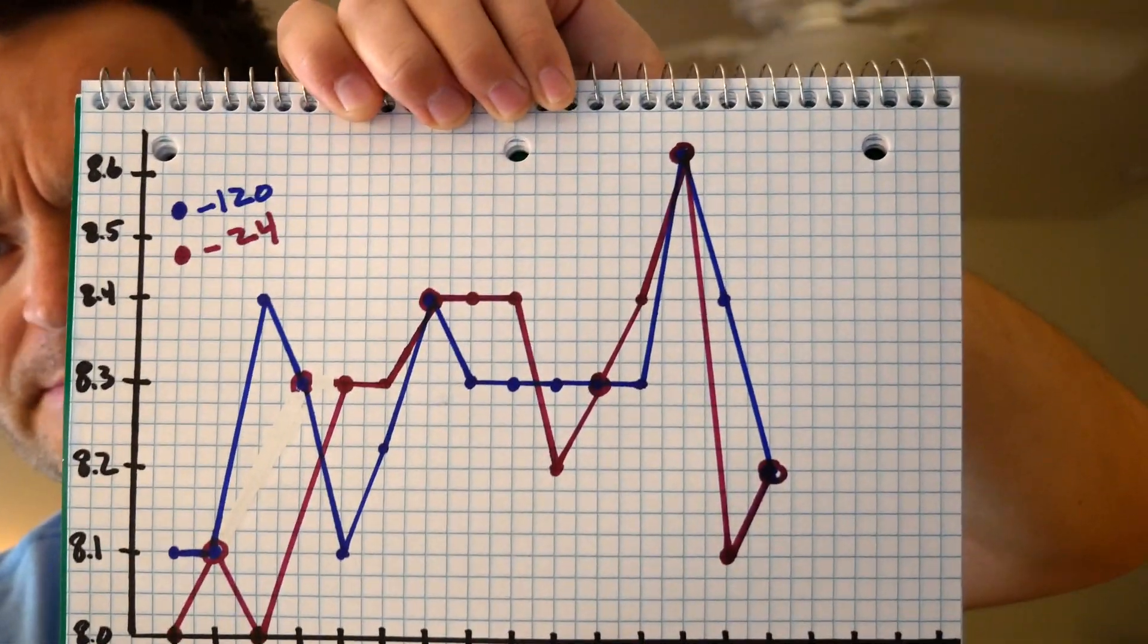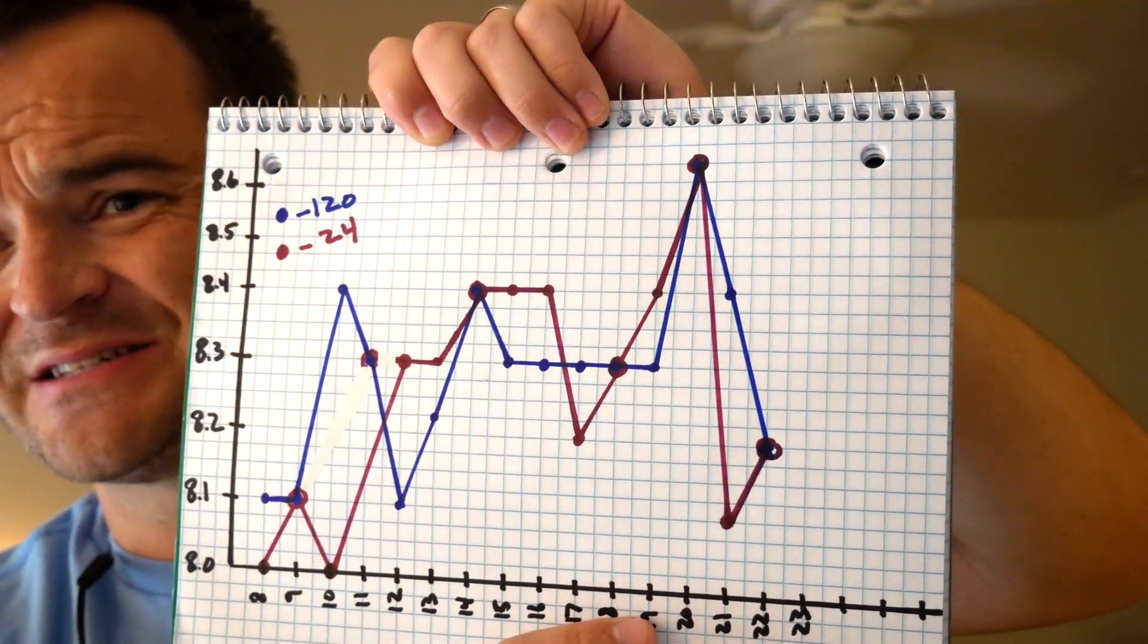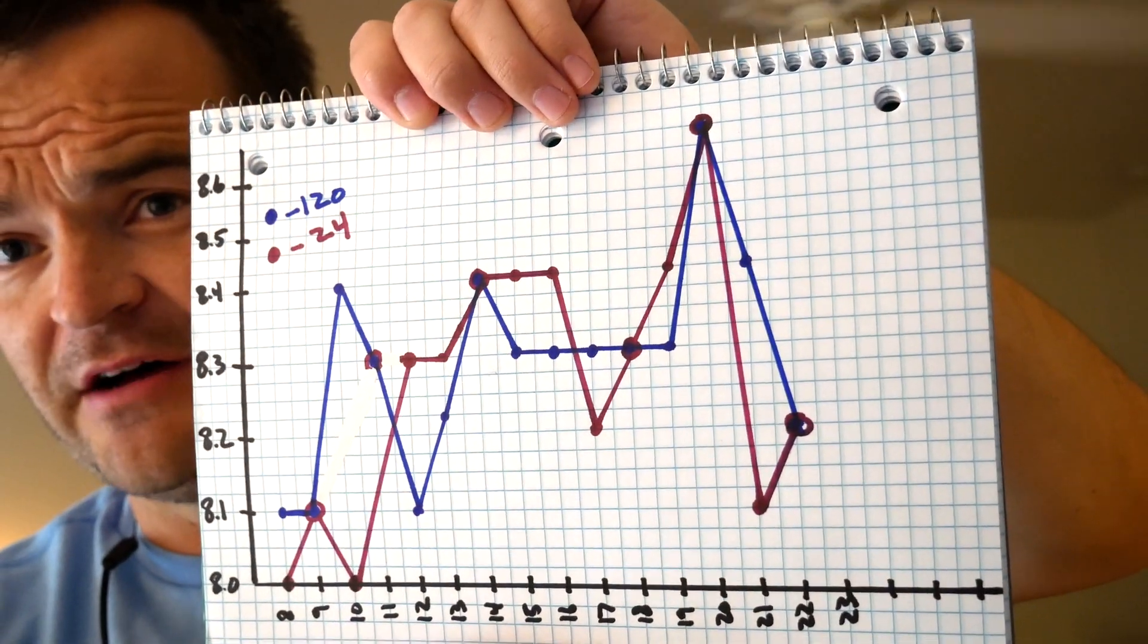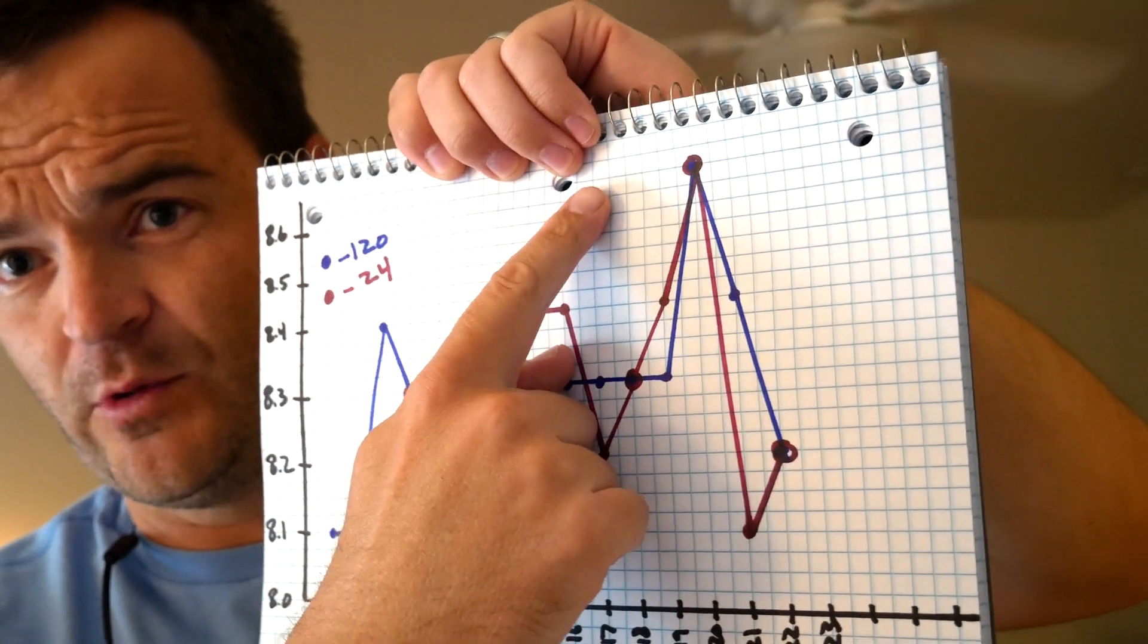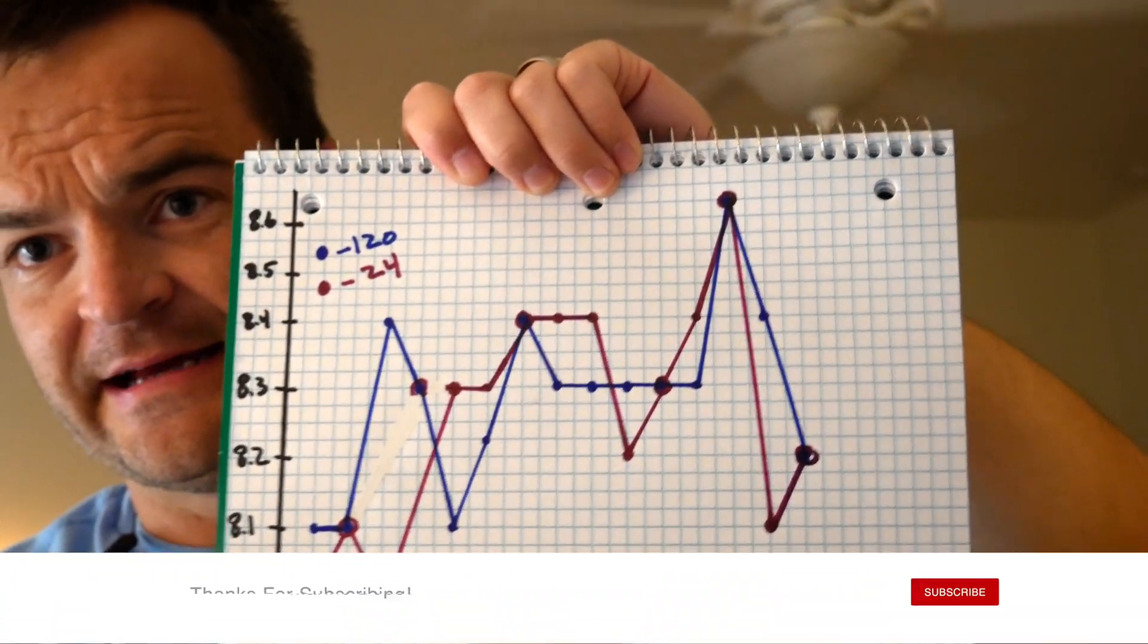I had this weird spike and I can't explain it because both tanks spike to actually above 8.6, but it was just for that one hour. And then they went back down again, but there it is.